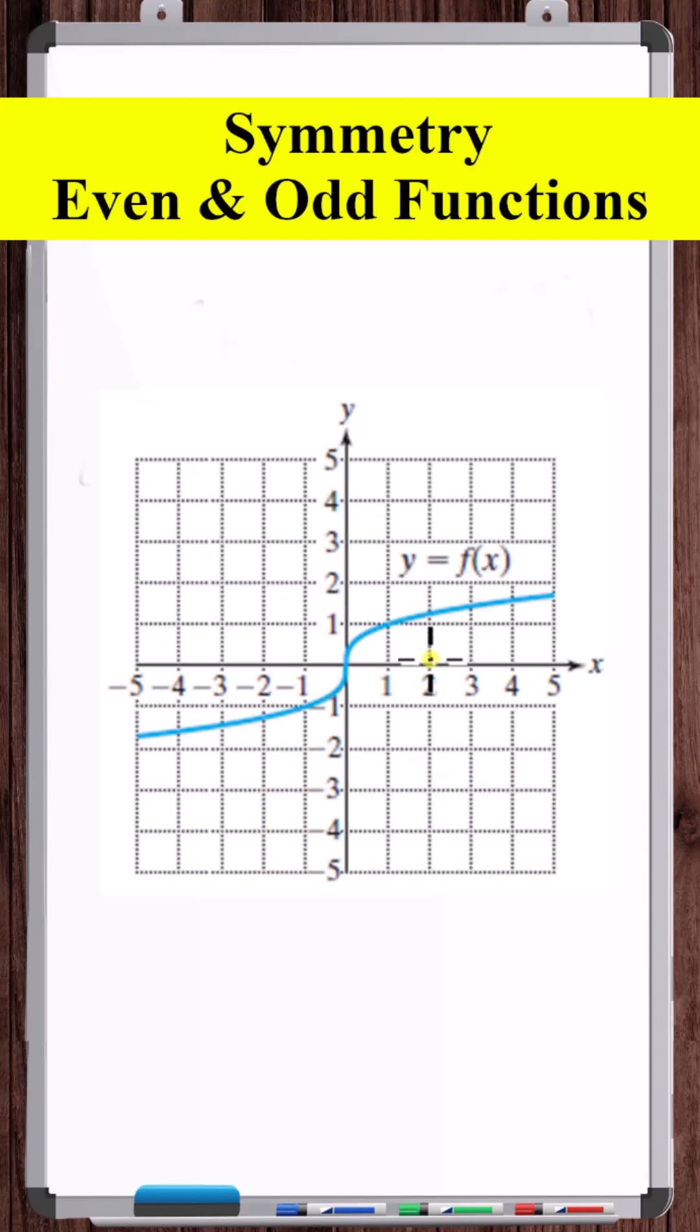If we remove both x and y, substitute minus x and minus y, and get the original equation, then that equation is symmetric about the origin.